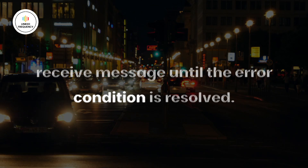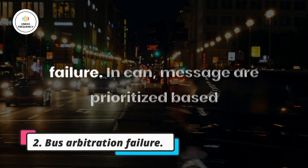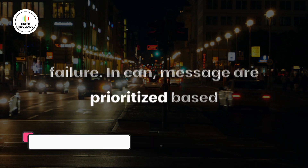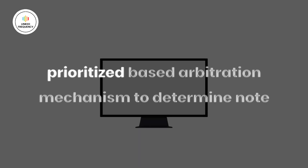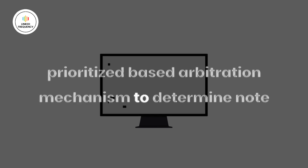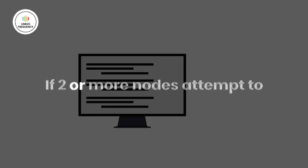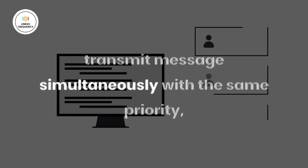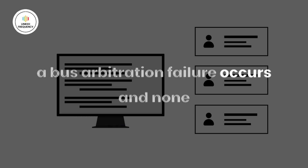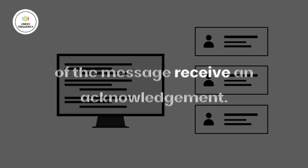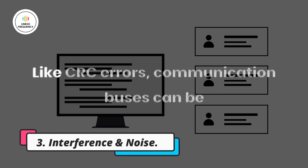In the bus off state, the node is disconnected from the network and won't be able to send or receive messages until the error condition is resolved. The second reason could be bus arbitration failure. In CAN, messages are prioritized based on their identifiers, and nodes must follow a priority-based arbitration mechanism to determine which node transmits first. If two or more nodes attempt to transmit simultaneously with the same priority, a bus arbitration failure occurs.